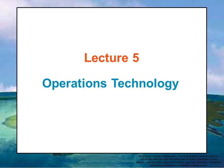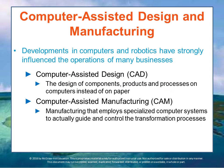Let's start talking about products and services and the technologies associated with producing them. Every industry has a basic underlying technology that dictates the nature of its transformation process — how it goes about creating its products and services.